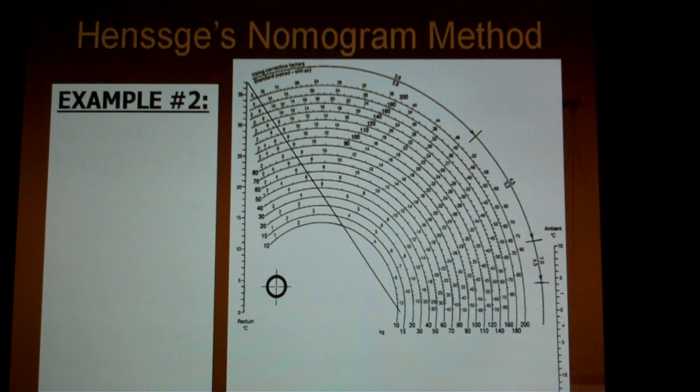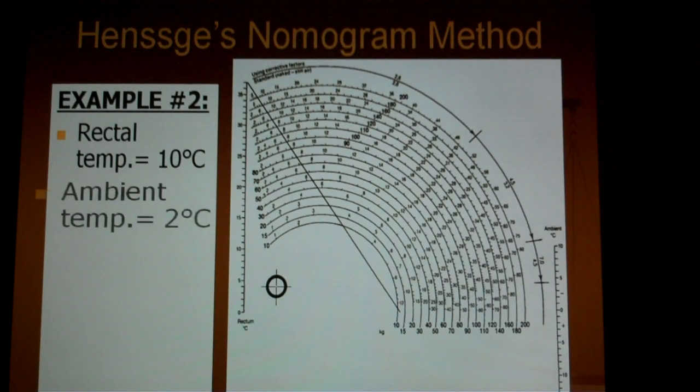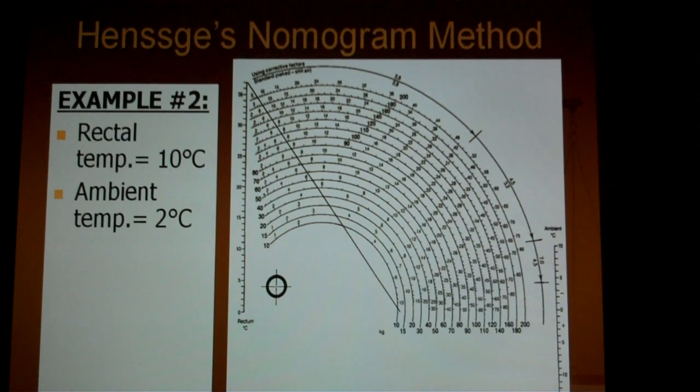You need to know the rectal temperature of the victim. You need to know the air temperature, which is often referred to as the ambient temperature. And then you need to know the individual's body mass, or what most people would call their weight.